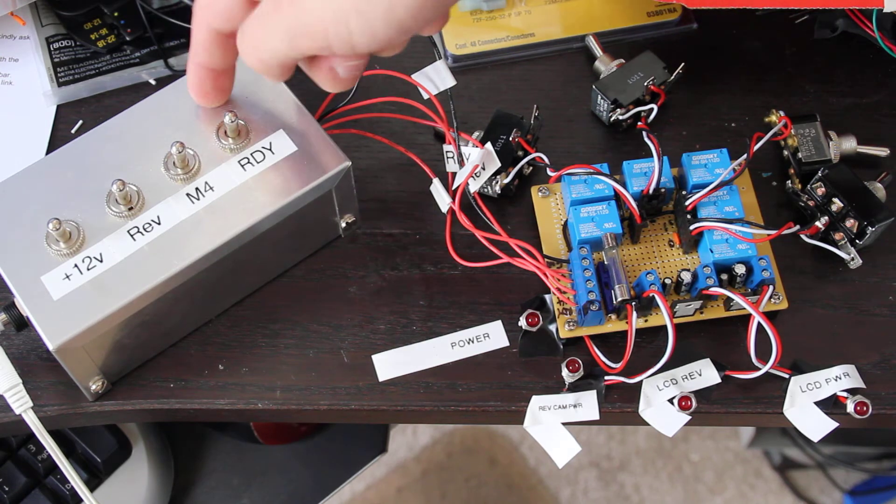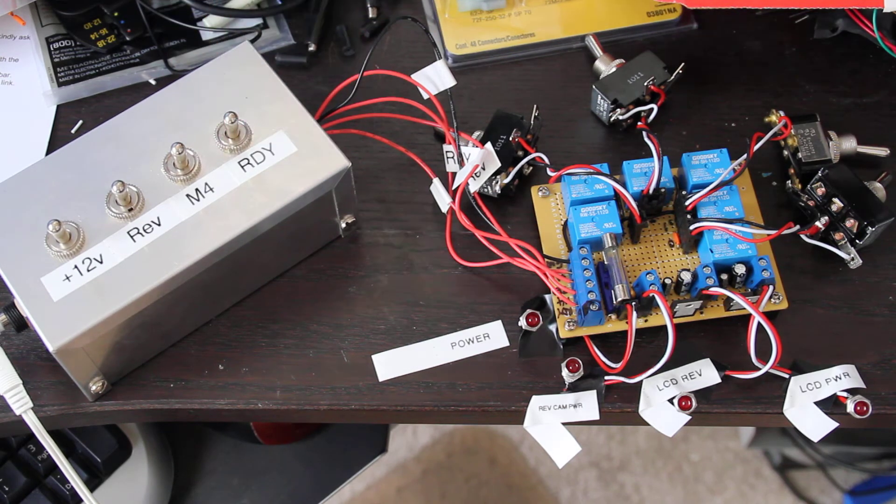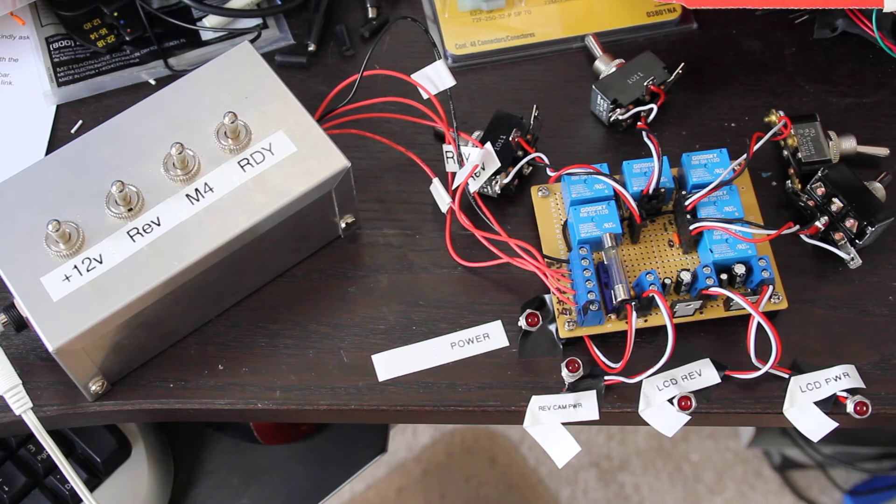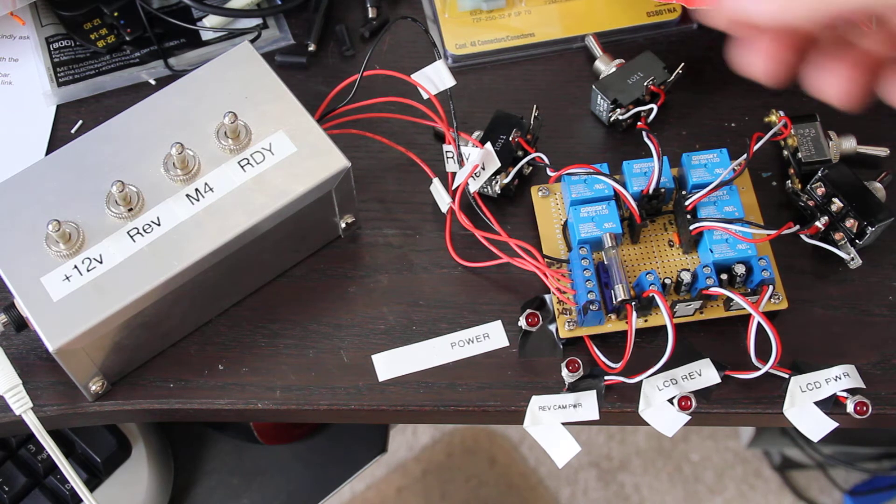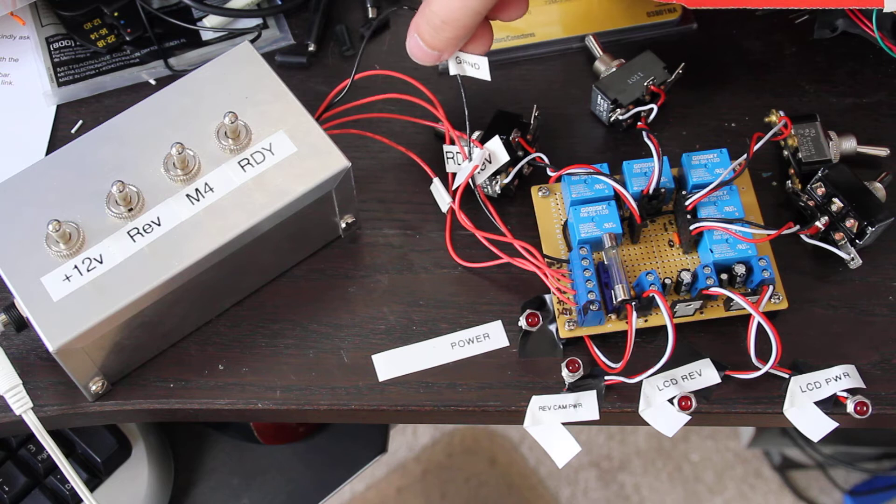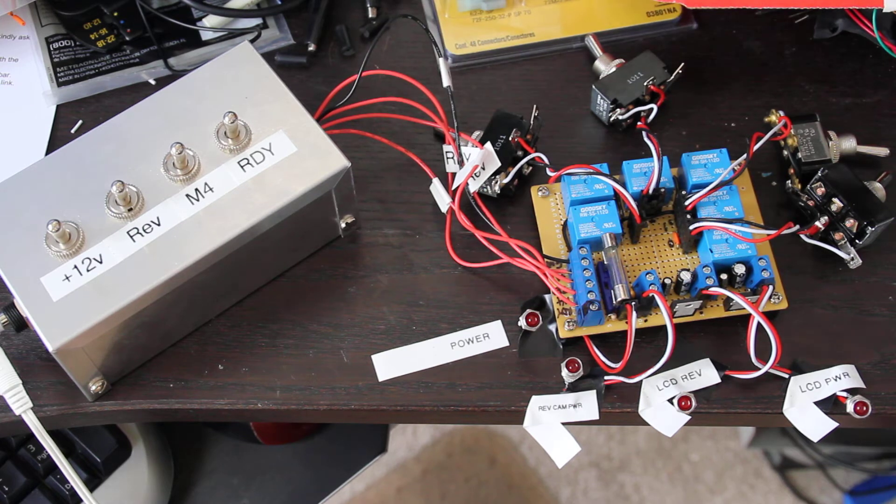So right here, this is just a little test box. It just contains four toggle switches, on-off switches, and lets me switch 12-volt power to each of the four lines. And it also has a ground wire coming out. That's just so I can test it on the bench without having to go out in the car or something like that.